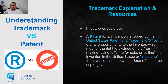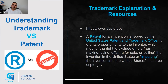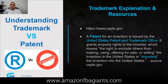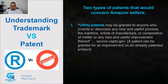A patent for an invention is issued by the United States Patent and Trademark Office — USPTO.gov. It grants property rights to the inventor, meaning the right to exclude others from making, using, offering for sale, or selling the invention in the United States, or importing the invention into the US. So if a product is patented, I'm not able to sell it because the original patent owner doesn't give me the right. Even if the product is sourced somewhere else but the patent is filed in the US, I cannot import it — I would be infringing on that patent and could get sued.